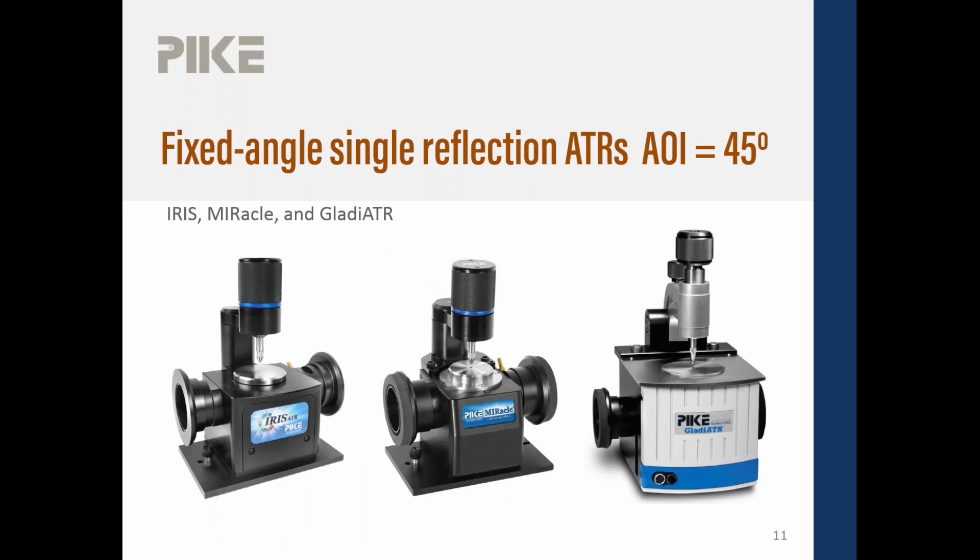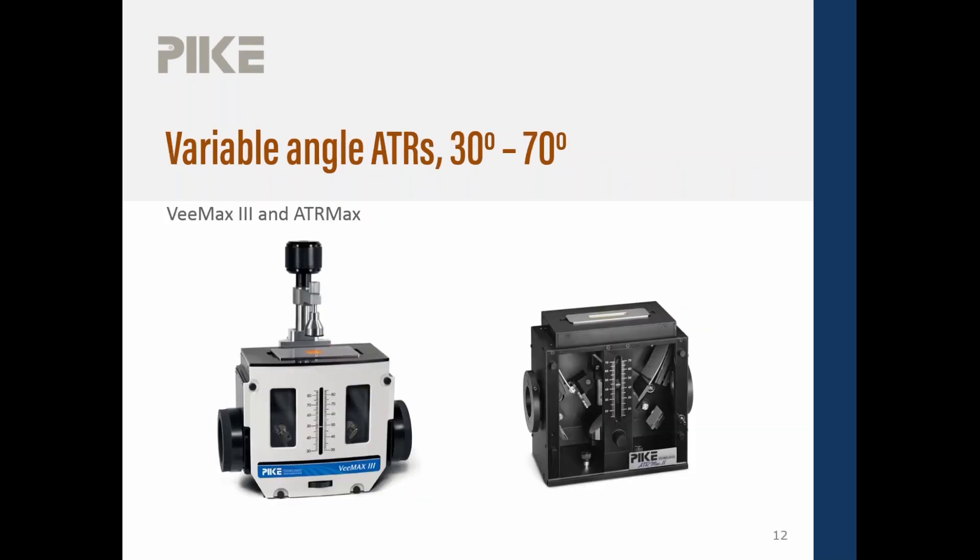So with fixed angle ATRs, probably most of you have these, they're the most popular. Most of you have an ATR in your sample compartment with a little tiny crystal, maybe a diameter of three millimeters or less. Those are going to have an angle of incidence of 45 degrees. I cannot think of any single reflection commercial ATR with a small crystal size that has an angle of incidence that's too far off from 45.